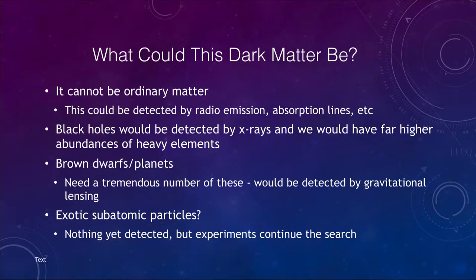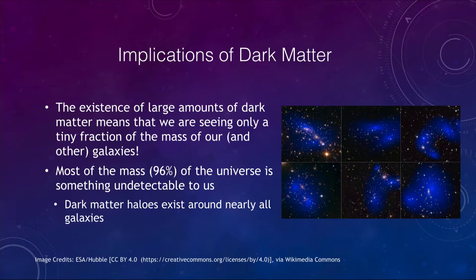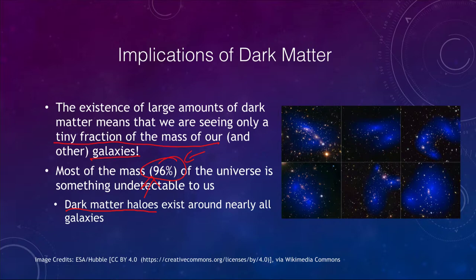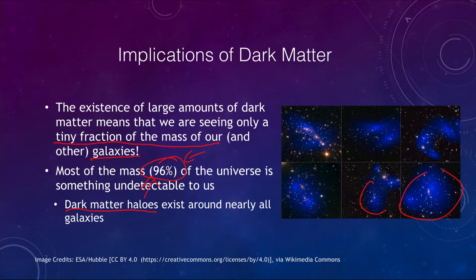If there is all of this dark matter out there, what it means is that what we've been looking at so far is only a tiny fraction of the mass of our galaxy. By implication, because we see this in other galaxies, it applies to other galaxies as well. 96% of the mass of the universe is something undetectable through traditional methods like telescopes — all we're detecting is its gravitational effects. Essentially every galaxy has a dark matter halo around it, and dark matter may be part of what helps form the structure in our universe that we see today.